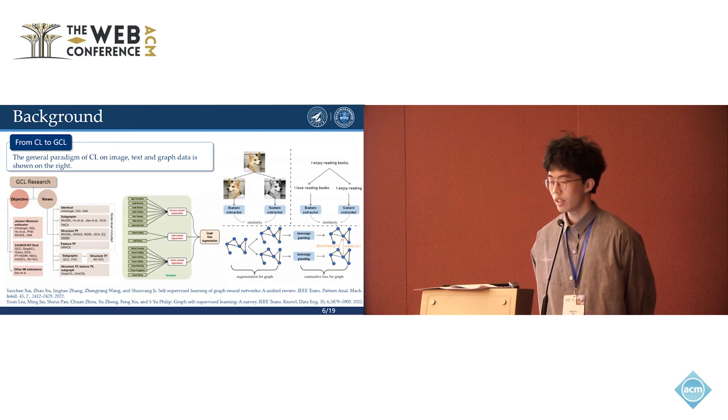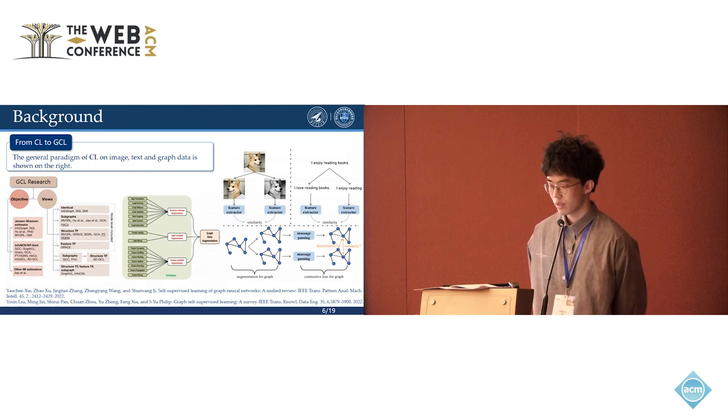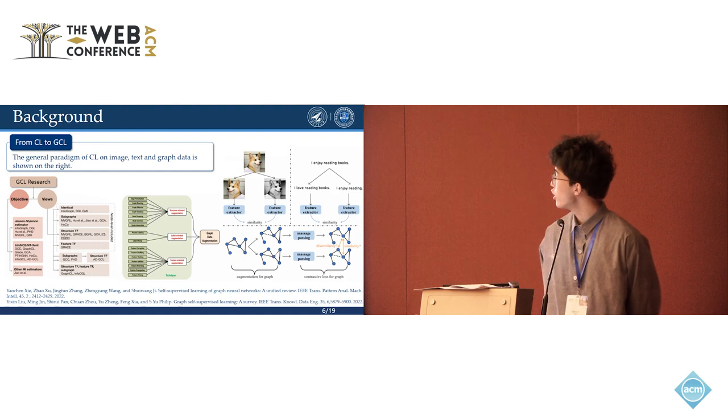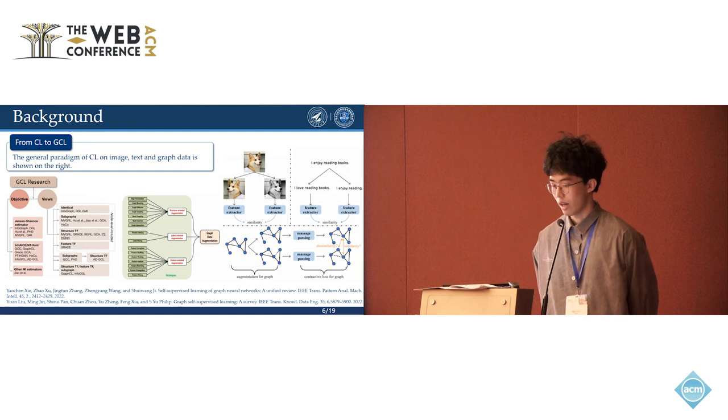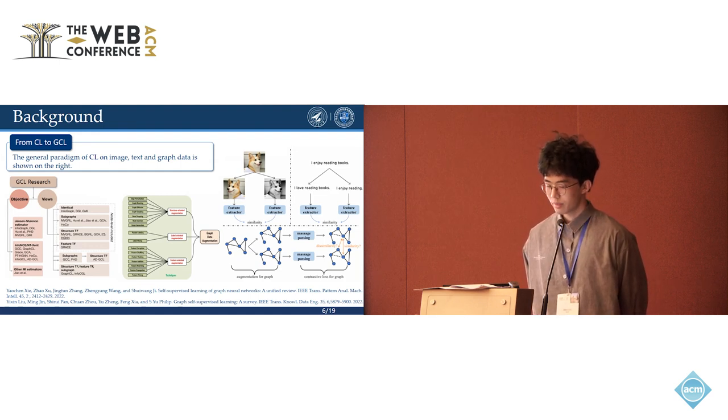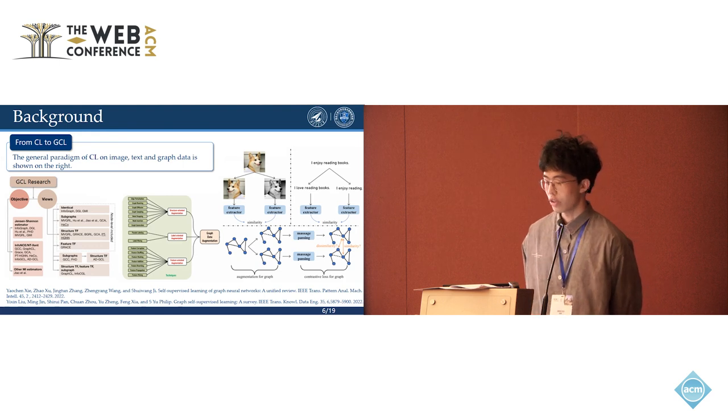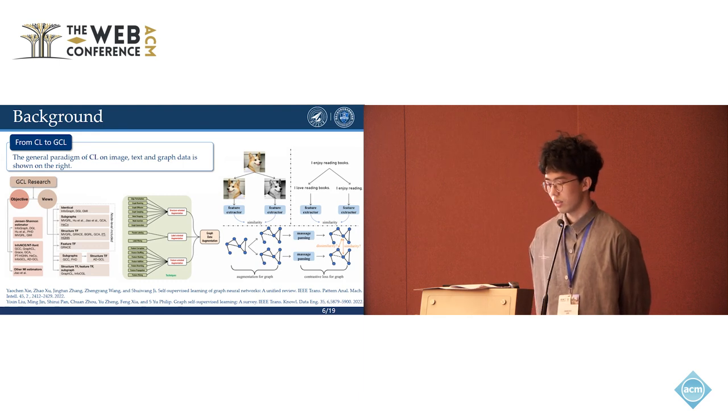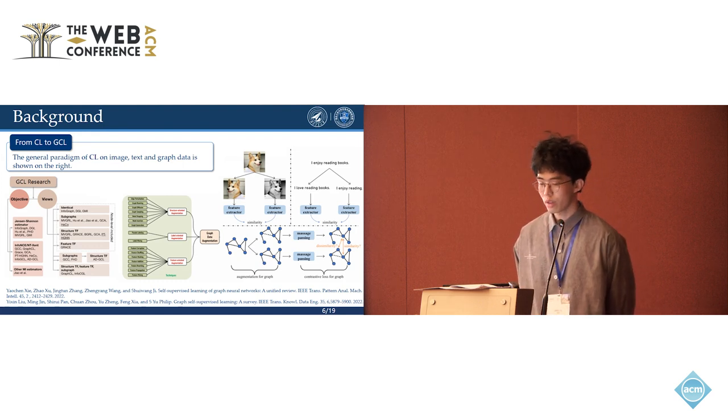From contrastive learning to graph contrastive learning, there may be two main changes. One is the augmentation on the graphs, like addition and deletion of nodes and edges, which are different from images or texts. The other is the change of contrastive loss according to its message passing mechanism. Since the backbone in CV and NLP are not doing message passing, our work focuses on the latter.